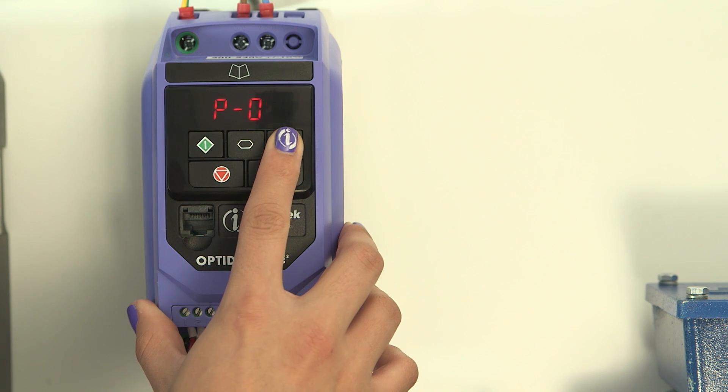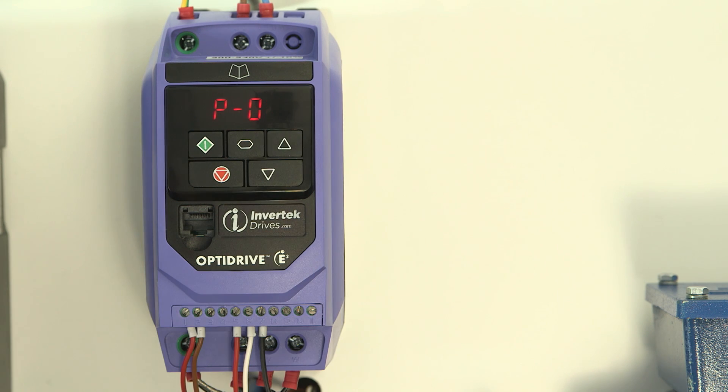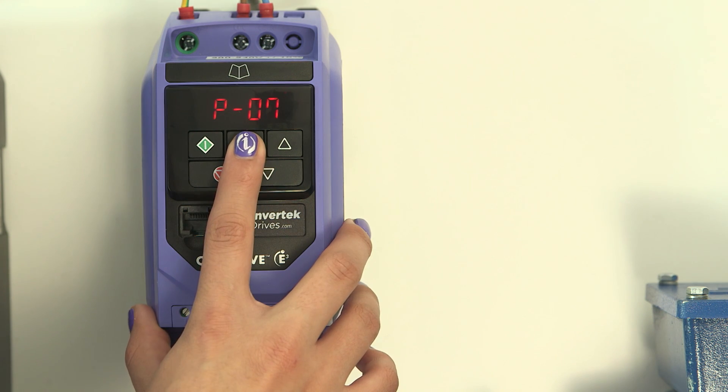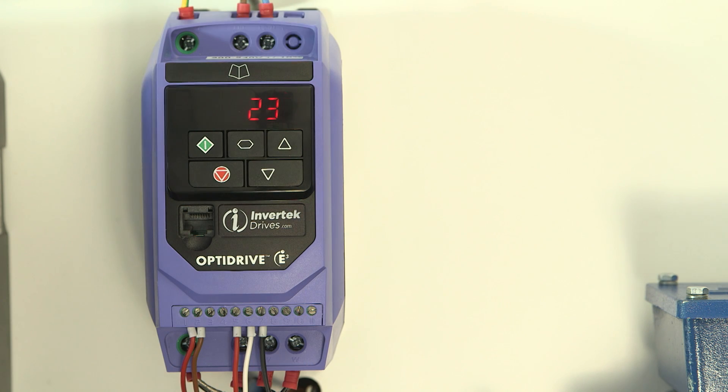Scroll with up or down arrows to the parameter you need to access. Here we can see parameter 7, the motor voltage. Press navigate again to access the parameter value which is already set to 230V, so we don't need to change it.